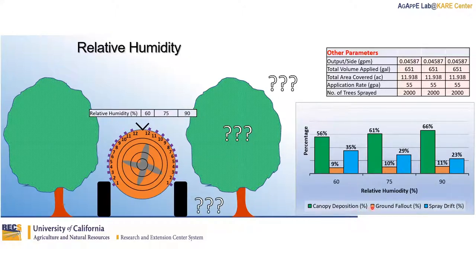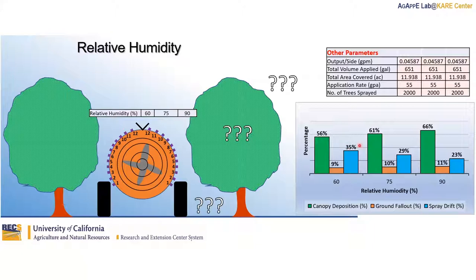How do higher relative humidity values affect the outcome? Increasing relative humidity increases percentage deposition. Increasing relative humidity from 60 to 90 percent increases percentage deposition from 56 to 66 percent. Because there is low droplet evaporation as a result of increasing relative humidity, spray drift is reduced in this case.